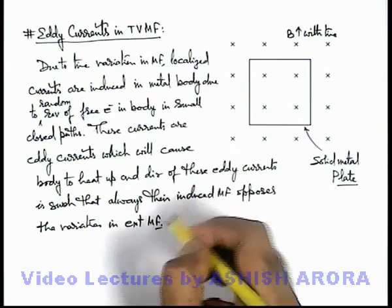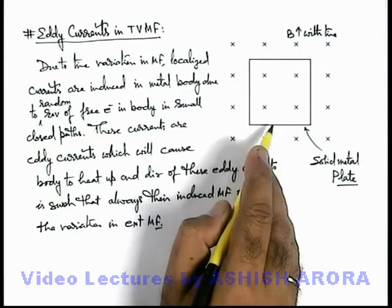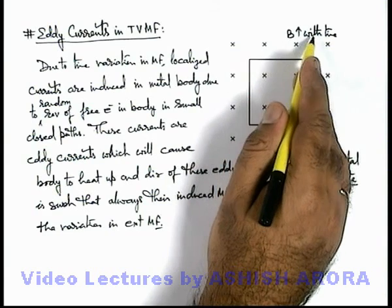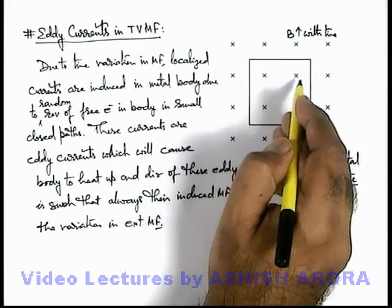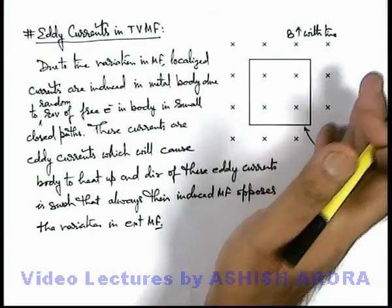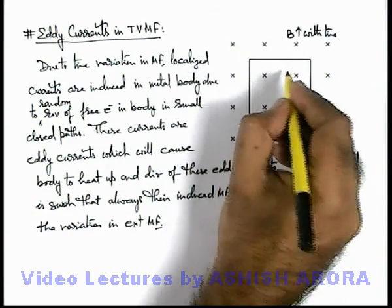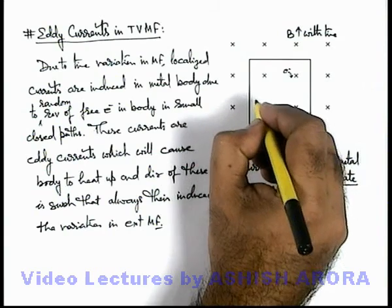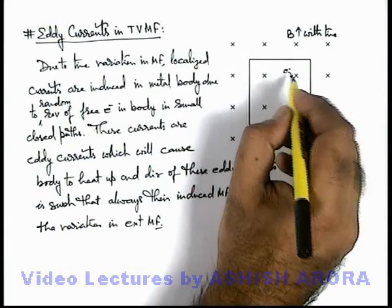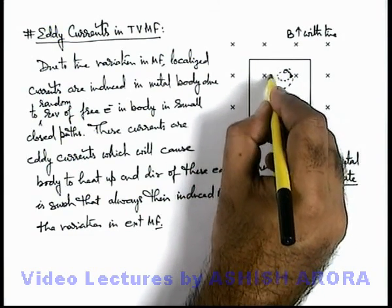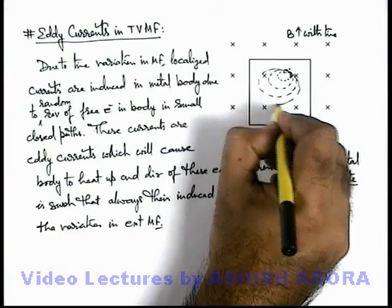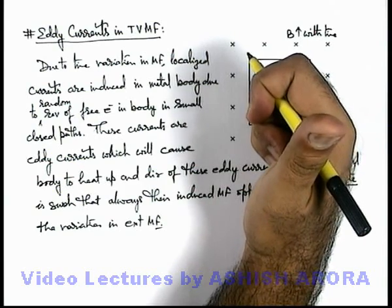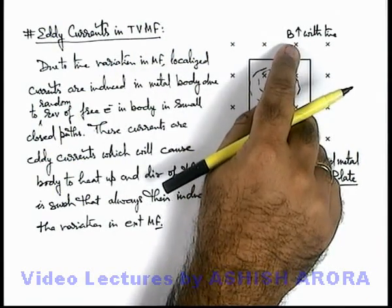The solid metal plate is at rest and a magnetic field increasing with time is applied to it. When a magnetic field increases with time in a region, there exist anticlockwise electric lines of force, which cause every free electron to rotate in a clockwise manner. However, as there is no predefined fixed path or circular coil in which the free electrons can move, the electrons can choose any of the infinite available paths, causing an anticlockwise eddy current to develop which opposes the external field that is increasing in the downward direction.